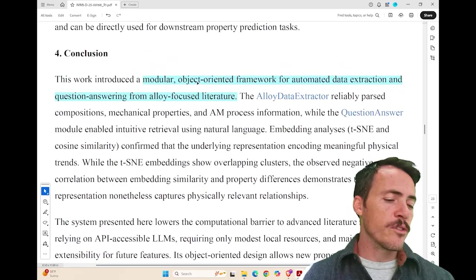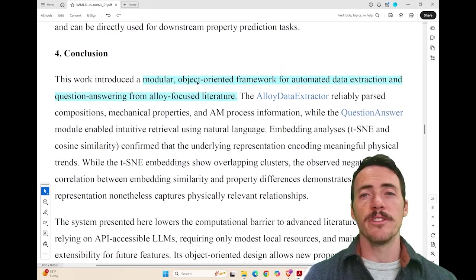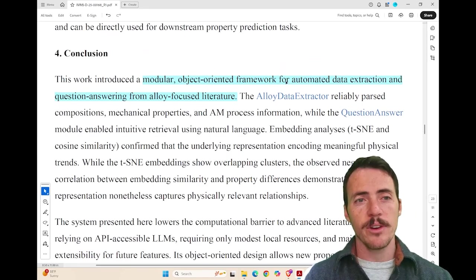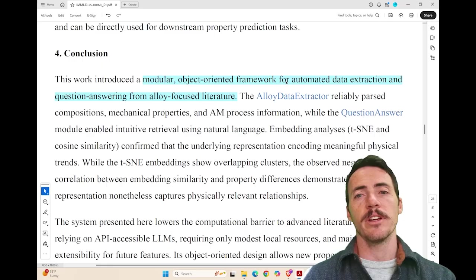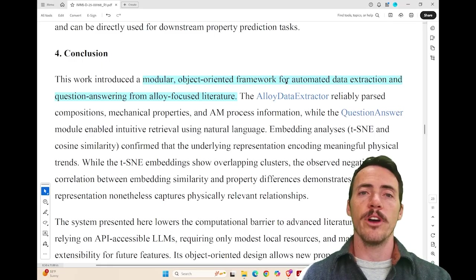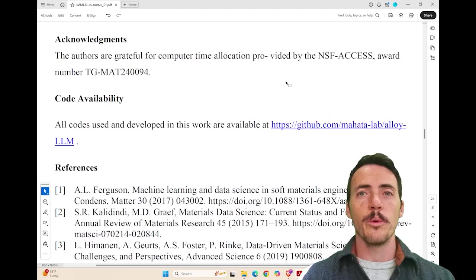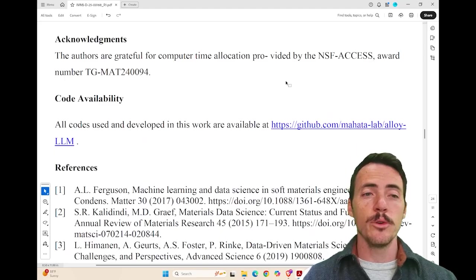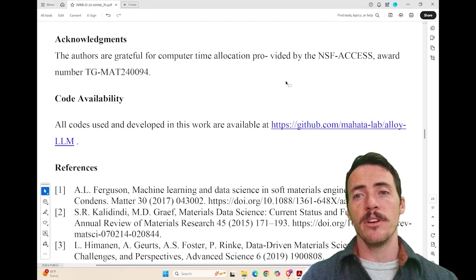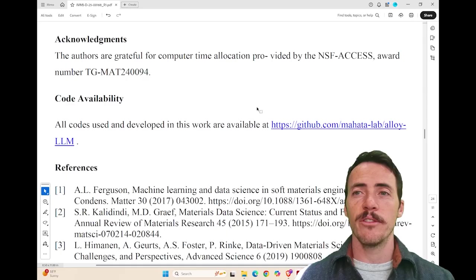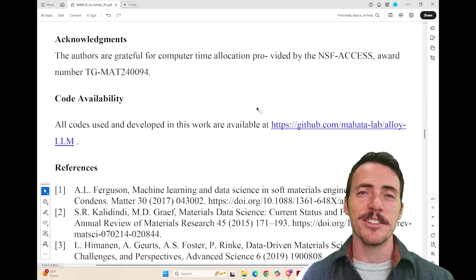So in summary, what they've created here is a modular object-oriented framework for automated data extraction and a question-answering tool. And they've deployed it on alloy-focused literature. And like everything in our journal, we focus on FAIR data. So sure enough, you can see the code that was actually developed here on their GitHub page and try it out yourself. So check it out in the latest issue of IMMI.